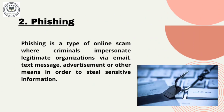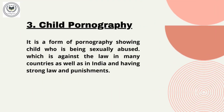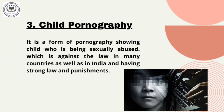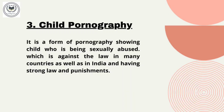Phishing is a type of online scam where criminals imitate or mimic illegal organizations via mail, text message, advertisement, or other means in order to steal sensitive information. Third is child pornography. It includes showing a child who is being sexually abused, which is against the law in many countries as well as in India, and it has very strong laws and punishments.